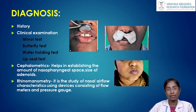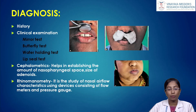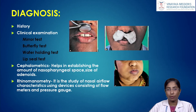The water holding test asks the patient to hold water in the mouth for one to two minutes — if successful, the patient does not exhibit the mouth breathing habit. Cephalometric diagnosis helps establish the amount of narrow pharyngeal space and size of adenoids; it is a 2D diagnostic aid. Rhinomanometry is the study of nasal airflow characteristics using devices consisting of flow meters and pressure gauges. Currently, nasoendoscopy is used for 3D measurement of airways.